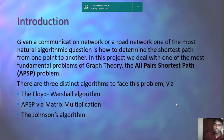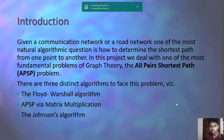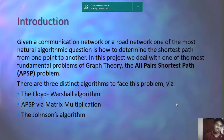Now, introduction to all pairs shortest path. In communication links like road networks, a natural question is how we determine the shortest path from one point to another. There are three distinct algorithms to address this problem: the Floyd-Warshall algorithm, all pairs shortest path via matrix multiplication, and Johnson's algorithm, which we are going to deal with here.